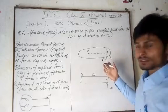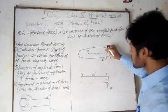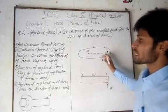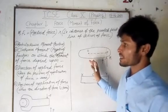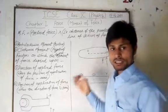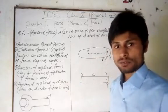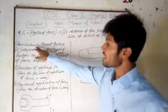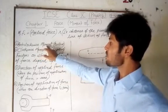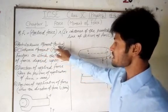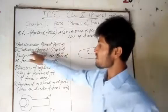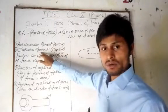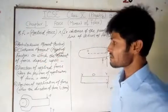If we change the direction of the force and change the direction of rotation also, then it will be clockwise movement. Based on direction of rotation, there are two types of moment of force: one is anti-clockwise movement, which is taken as positive, and the other is clockwise movement, which is negative.